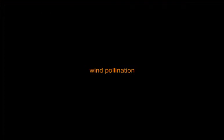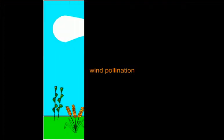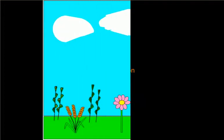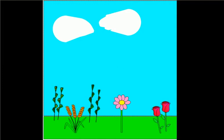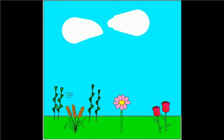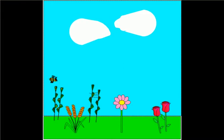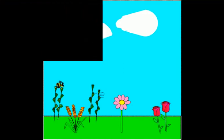Here is an example of wind pollination. As the wind passes this ryegrass it blows the pollen off and carries it along with it. The wind carries the pollen to another lot of ryegrass, therefore pollinating it. That is an example of wind pollination.